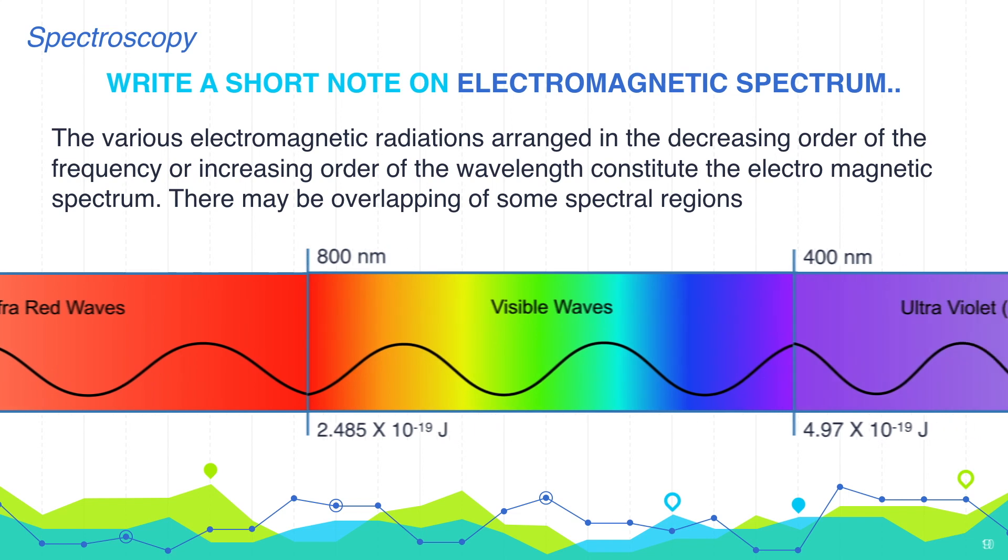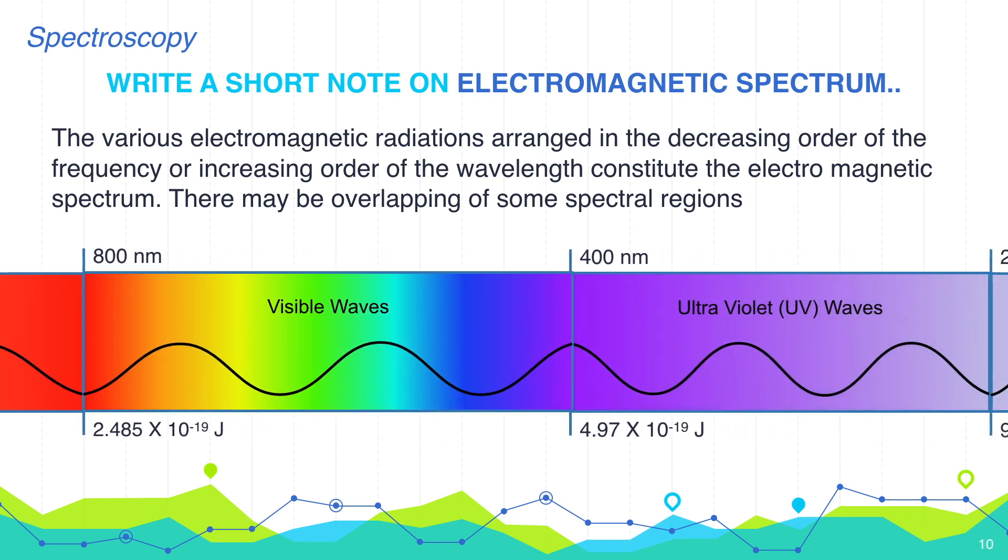Next range starting from 800 nanometer to 400 nanometer is the visible region. This region is called visible because this region is visible to our eyes. Human eye cannot see any other range in electromagnetic radiation. This region consists of seven colors with different wavelengths.